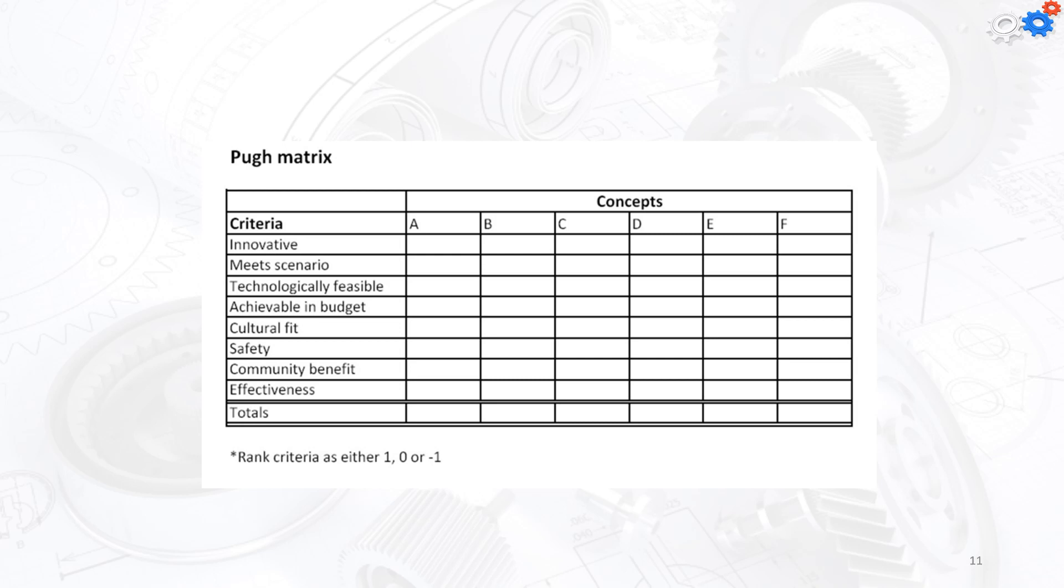Examining the Pugh matrix, we can see criteria ranked from A to F, like innovative, meets scenarios, technologically feasible, achievable in budget, cultural fit, safety, community benefits, and effectiveness. In total, we rank the criteria as either 1, 0, or minus 1 for very negative impact.